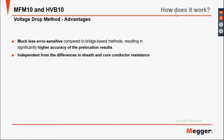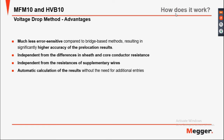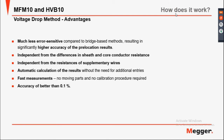The volt-volt method is independent from differences in the sheath and core conductor resistance, and independent from the resistance of the supplementary wires. It provides automatic calculation of results without the need for additional entries, fast measurements, no moving parts, no calibration procedure required, and accuracy of 0.1% or better.